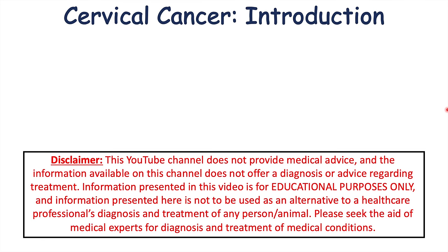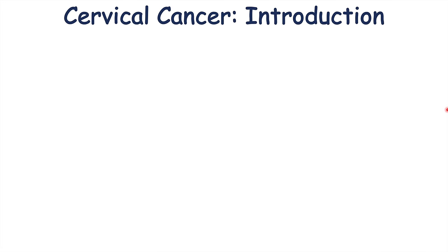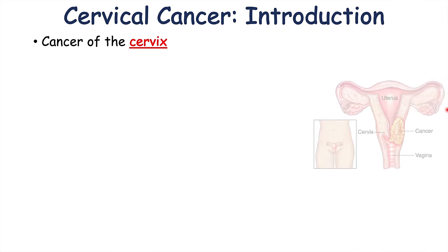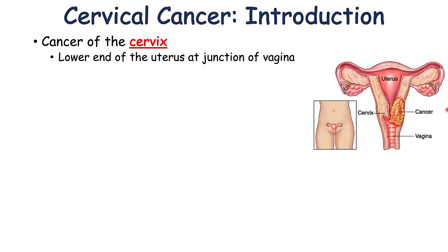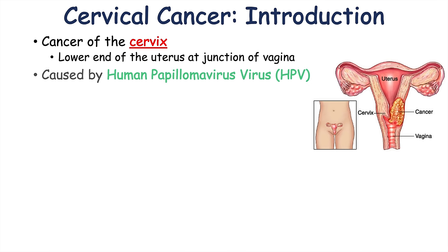Hi everyone, this lesson is on the signs and symptoms of cervical cancer. Cervical cancer is cancer of the cervix, which is the lower end of the uterus at the junction of the vagina. Here is the cervix, and you can see that there is a cancer growing here, and it can spread into surrounding structures leading to particular signs and symptoms we're going to talk about in this lesson.